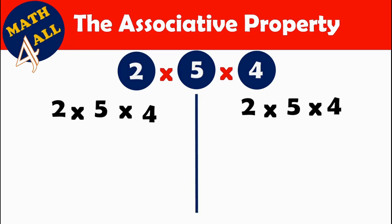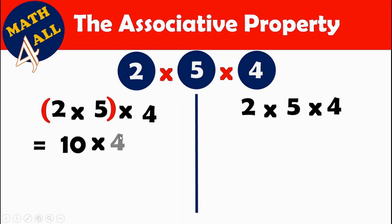In the first way, we will group 2 by 5 first. 2 by 5 equals 10, and 10 by 4 equals 40. Let's go to the second way.